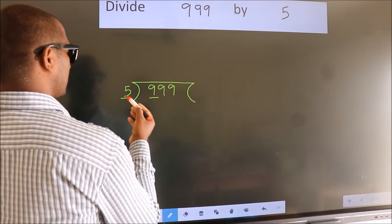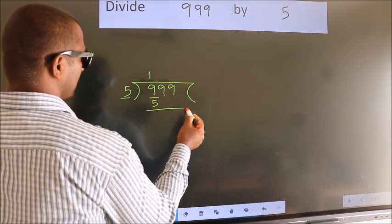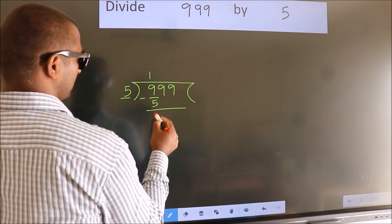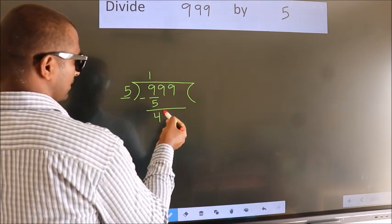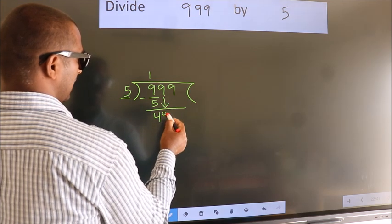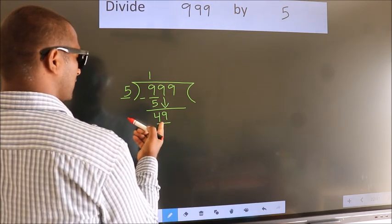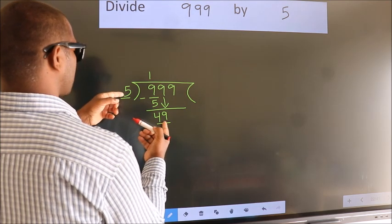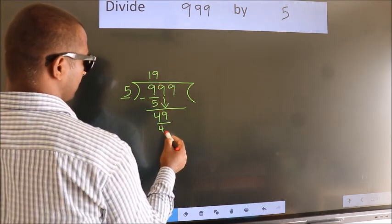Now we subtract: 9 minus 5 gives us 4. After this, we bring down the next digit — so 9 comes down, making 49. A number close to 49 in the five times table is 45 — five nines are 45.